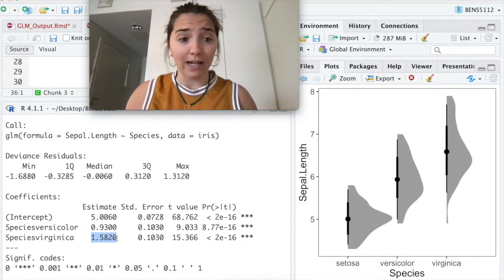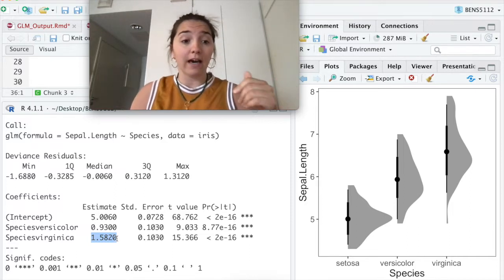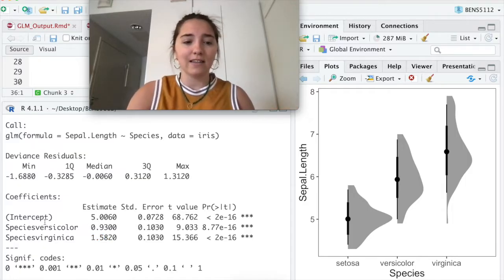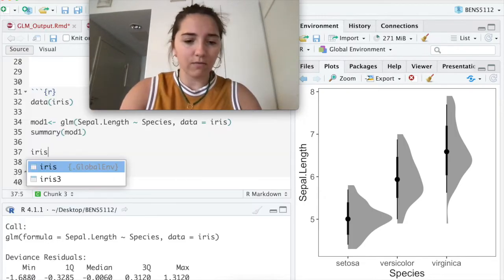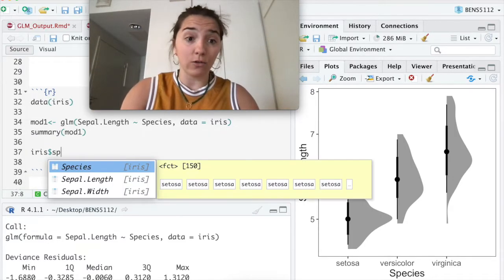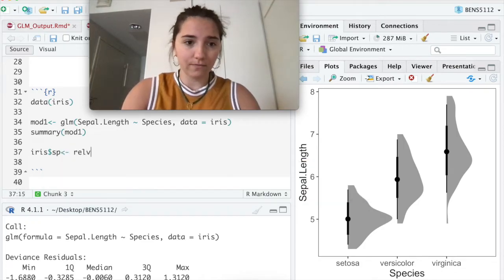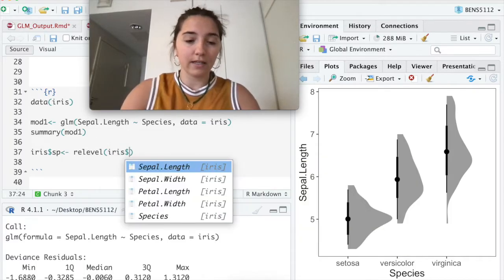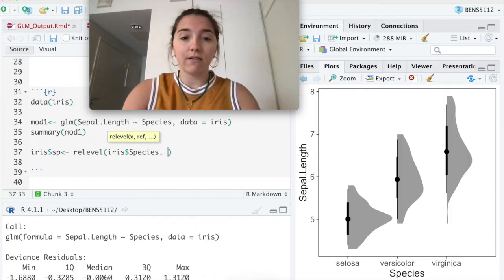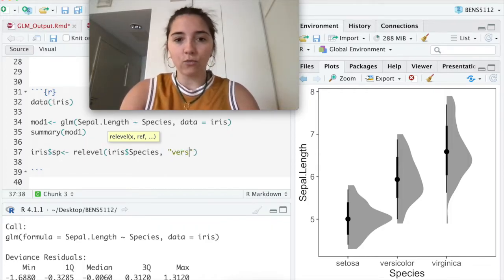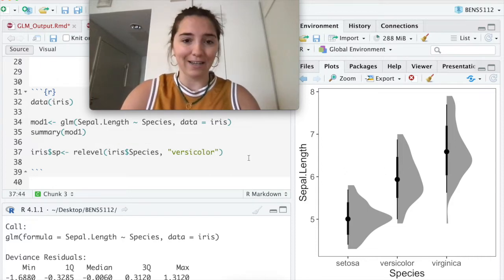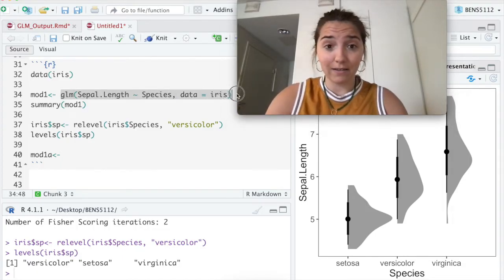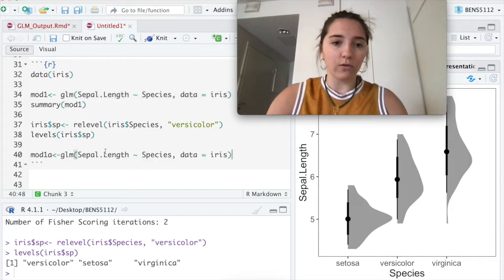We can change what we're comparing the value to. So we could re-level it to look at versicolor. And actually let's do that right now, just to kind of show you guys that this thing, these comparisons are something that you set and you're kind of the master of something, you know, quick and dirty. I'm going to rename, I'm going to make a new column and I'm just going to say re-level. And I'm going to say, please re-level the iris species and please put versicolor first.